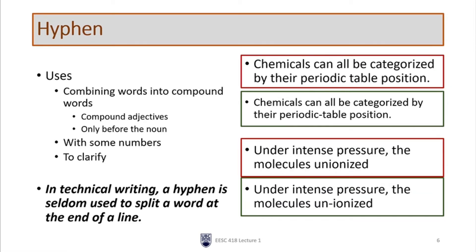The next type of punctuation is the hyphen. The hyphen is fairly common, has a few common uses, and they're fairly straightforward — probably one of the more straightforward types of punctuation to remember. The most important use is combining words into compound words, because this can alter the meaning of a sentence and clarify things if done correctly. But this is often done incorrectly, which leads to confusion about which noun is being referred to by an adjective or set of adjectives.